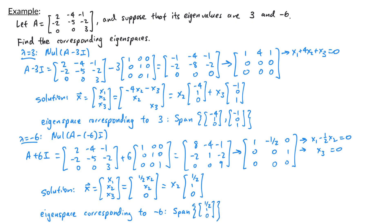To avoid fractions, we can multiply that vector by 2, so the eigenspace is also the span of 1, 2, 0. That's how you find the eigenspaces for a matrix when you know the eigenvalues. In our next video, we'll talk about how to find the eigenvalues of a matrix.